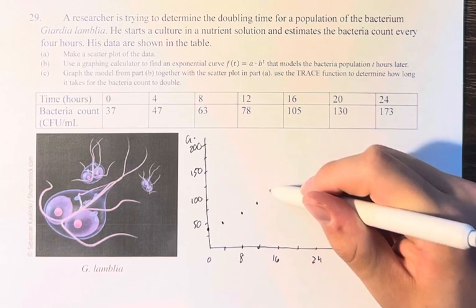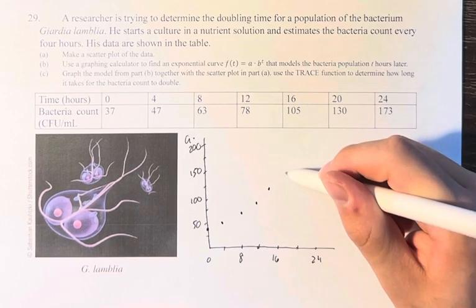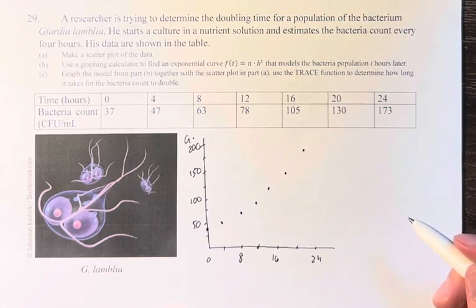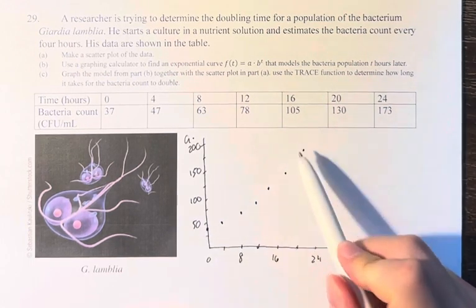Then 16, 105, then 20, 130, and 24, 173. These are just rough points, but we can see the exponential relationship.